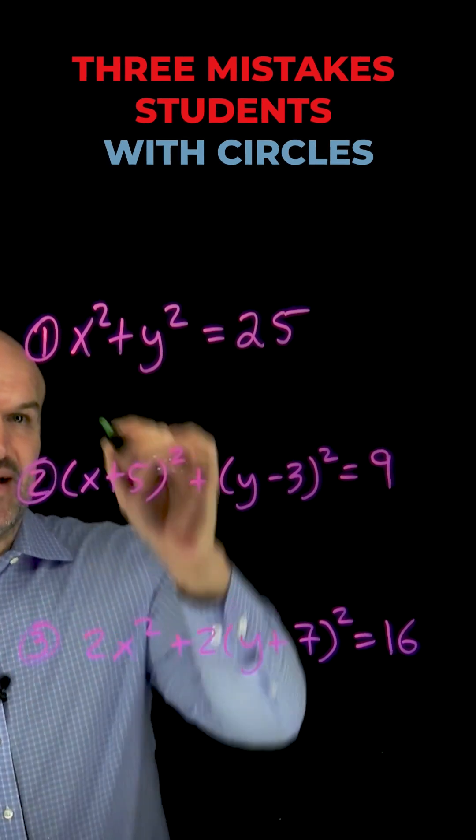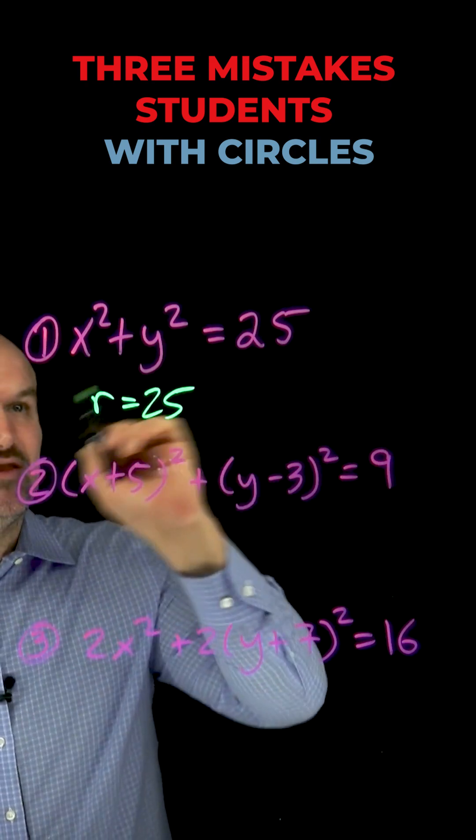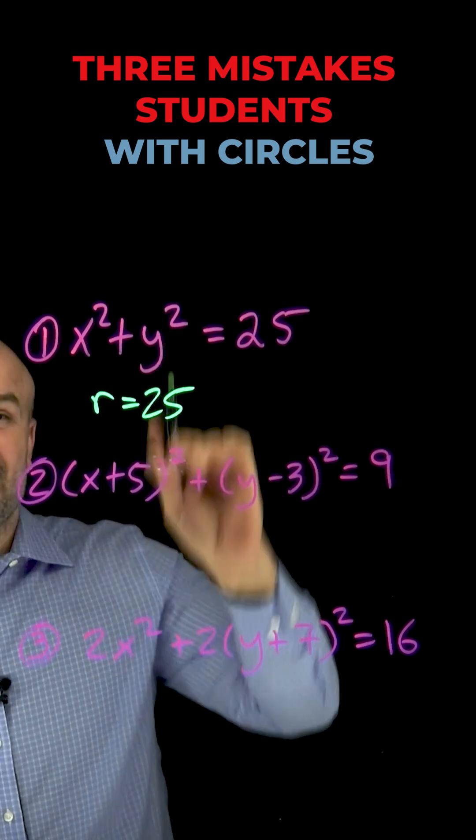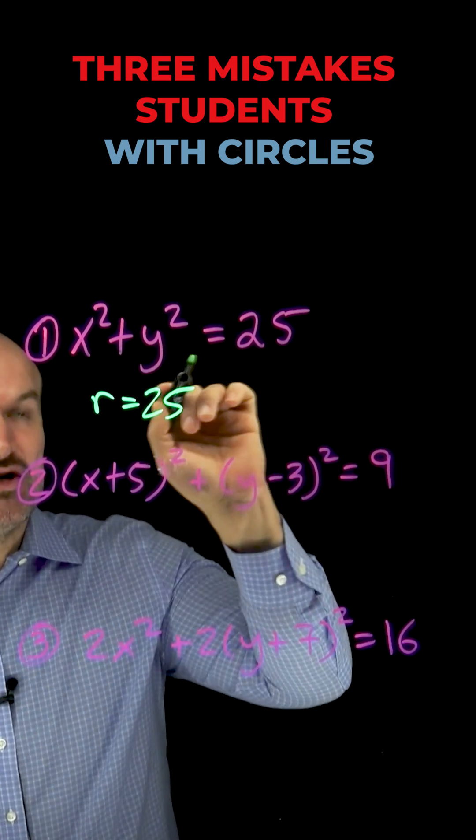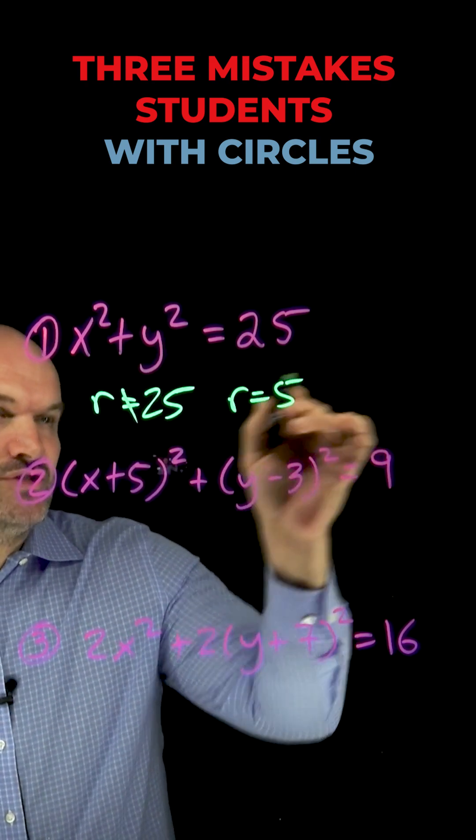The first mistake that students will make is they say that the radius is going to equal 25. No, no, no. Remember, ladies and gentlemen, the formula is x squared plus y squared equals r squared. So therefore, 25 equals r squared. So r is not equal to 25, r is going to equal 5.